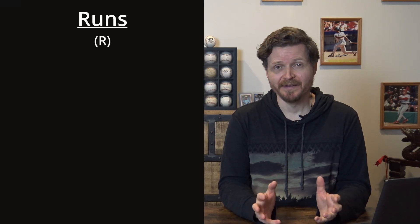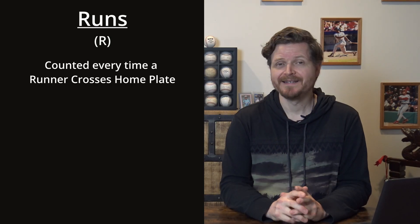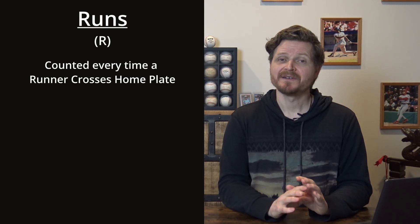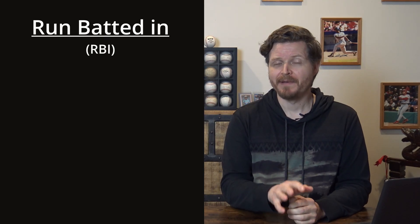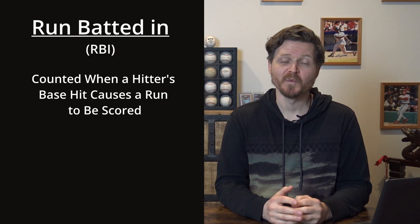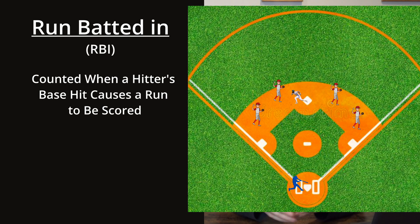Just like the pitching video, everything we've talked about up to this point is about getting on base. But games are won and lost because of runs scored. Runs are counted every time a runner crosses home plate — it doesn't matter how they reach base, whether by a base hit, an error, or a walk. The next stat is the run batted in, or RBI. An RBI is counted for a player when his base hit causes a run to be scored.